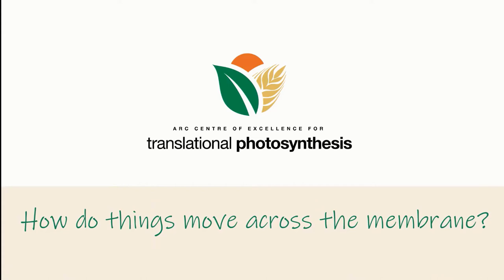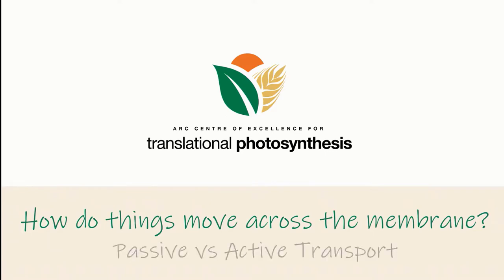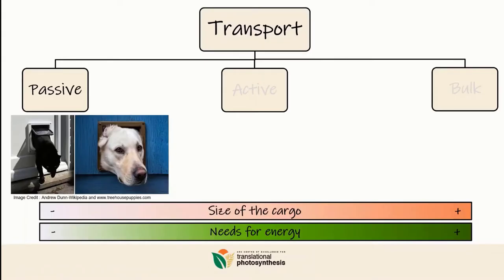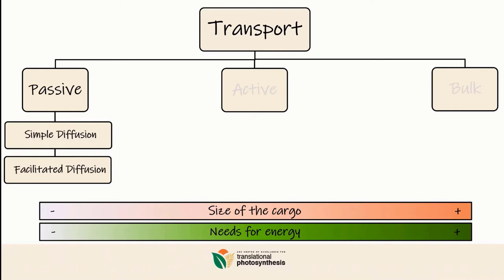Hi everyone, welcome back to our series of videos about how things move across the cell membrane. Today, we are going to talk about passive and active transport. There are two different types of passive transport: simple diffusion and facilitated diffusion.